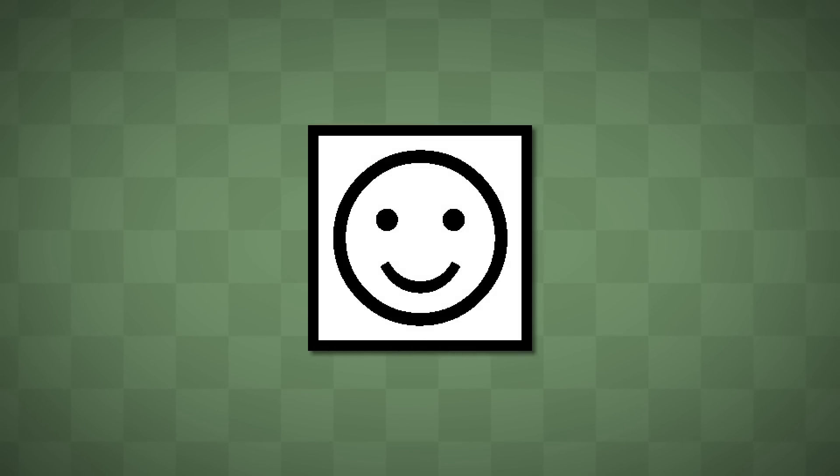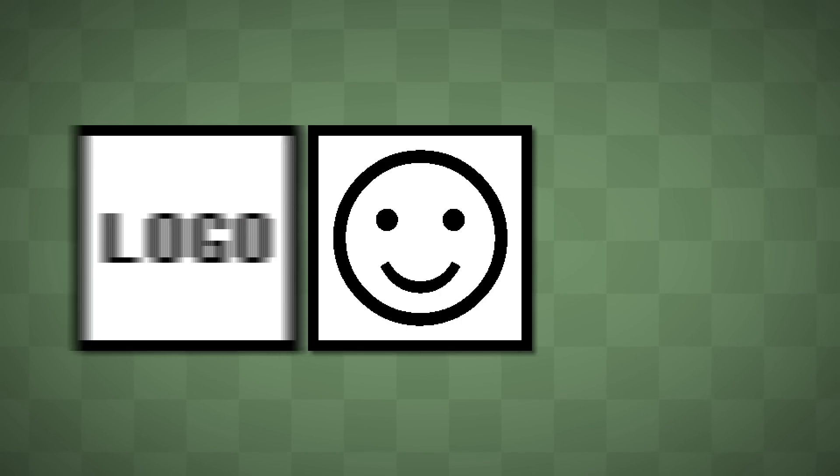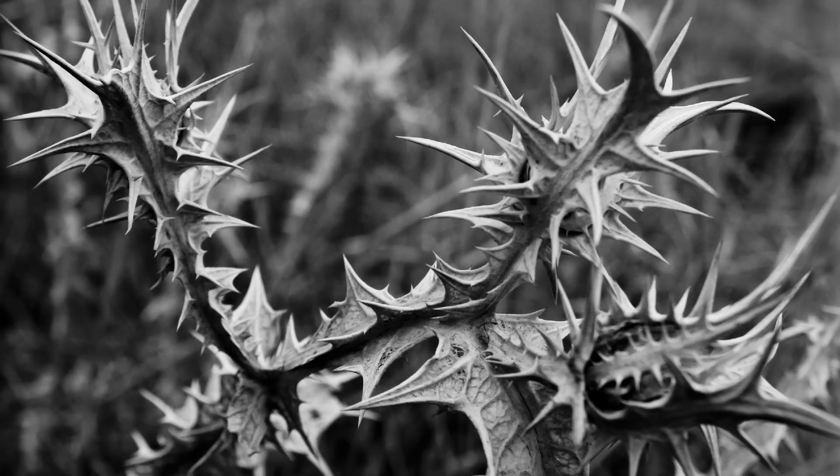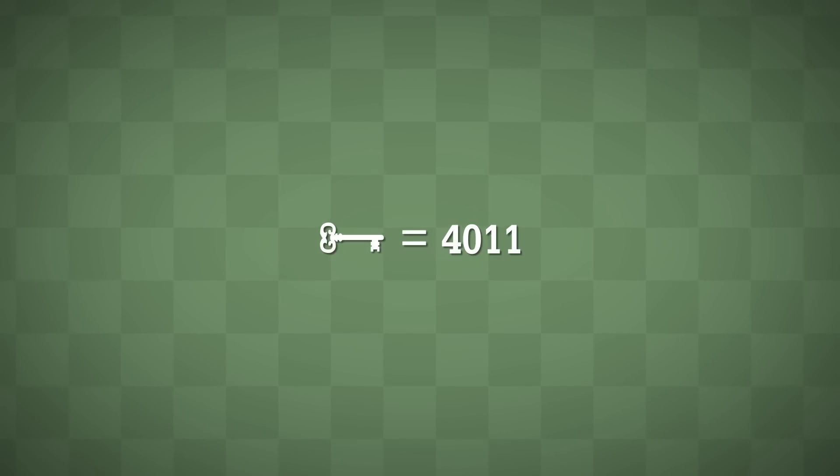This next step is where my secret smiley face image comes into play. This image could easily be a company's logo or contain copyright information about the image. As long as it's a binary black or white image, we're good. I run through the image again, but I need to choose the same pseudo-random sets of points that I chose before. This is achieved with a numeric key that dictates the pseudo-random order.